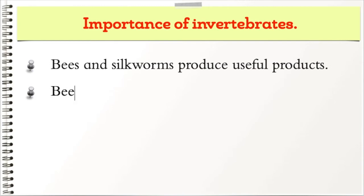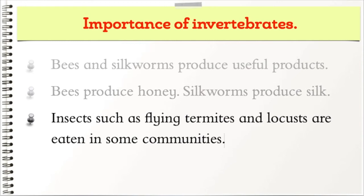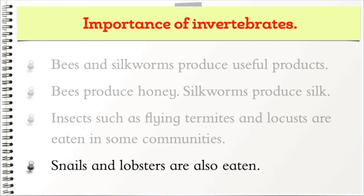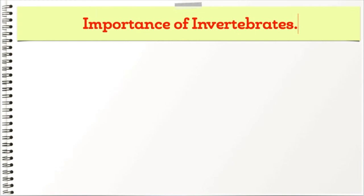What is the importance of invertebrates? Bees and silkworms produce useful products — bees produce honey, and silkworms produce silk. Insects such as flying termites and locusts are eaten in some communities, and snails and lobsters are also eaten. Bees and butterflies help in pollination of plants, playing a role in reproduction of plants. Pollination leads to the formation of fruits and seeds.